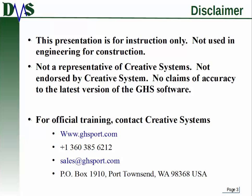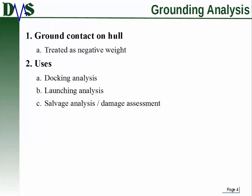Grounding analysis: so far, everything in GHS has assumed that the vessel is floating in the water. Now we're introducing the concept that the vessel might have some part of it in contact with the ground. The way GHS does this mathematically is that ground contact is essentially treated as a negative weight. That has pretty significant implications for stability, because the contact is at the bottom of your hull — adding a negative weight at the bottom is the same as adding a positive weight up high. It reduces your stability.